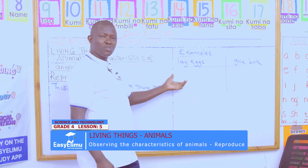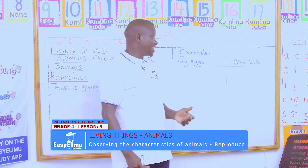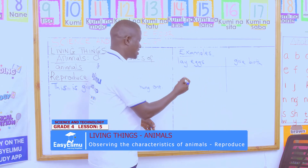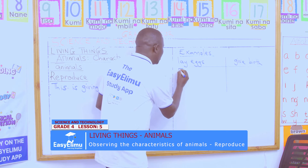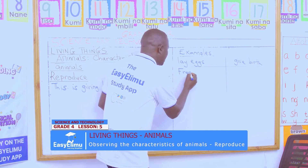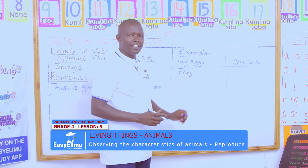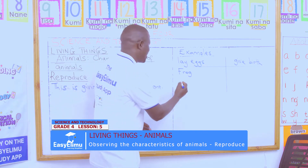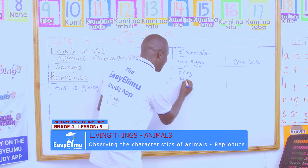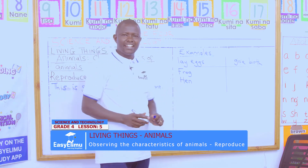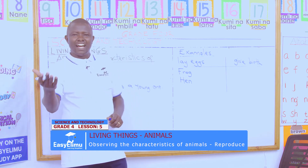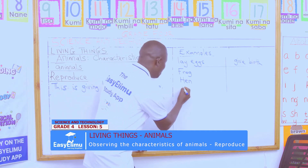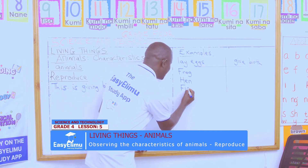Examples of animals which lay eggs — who can give us an example? Victor has said a frog. Frog lays eggs. Jane has said a hen. Hen lays eggs. And Victor also said fish. Fish lays eggs.